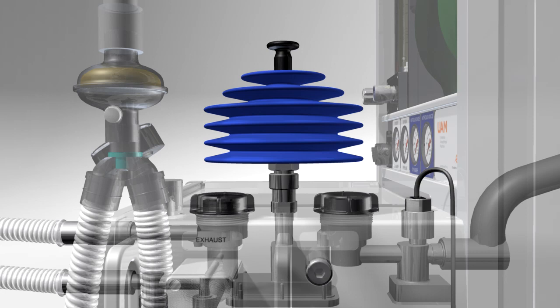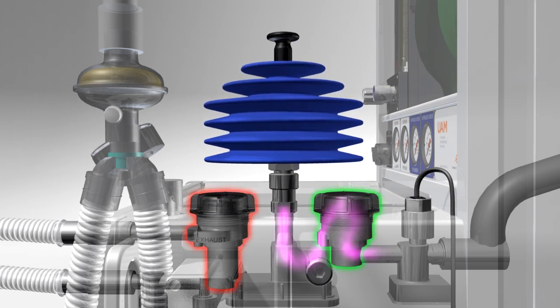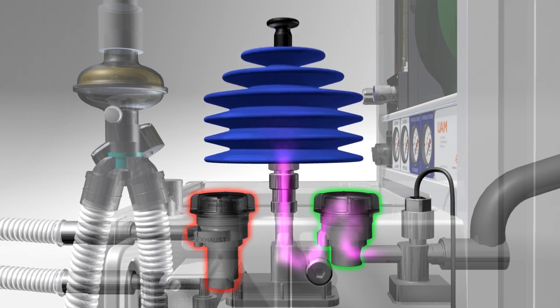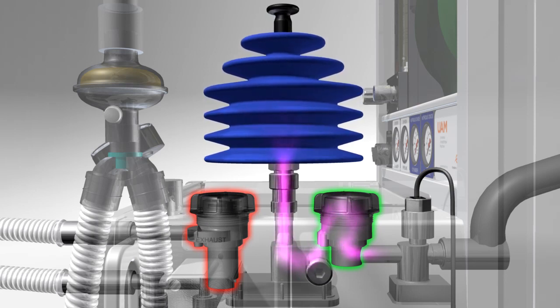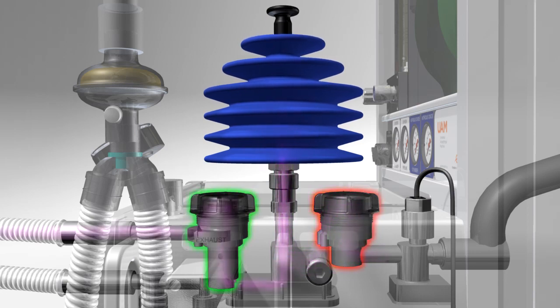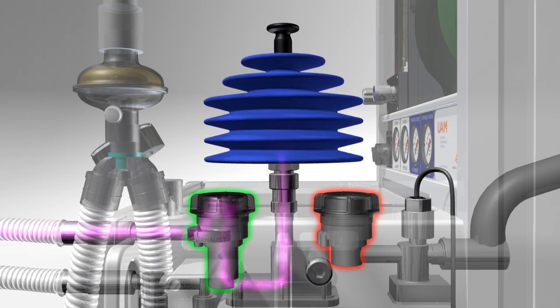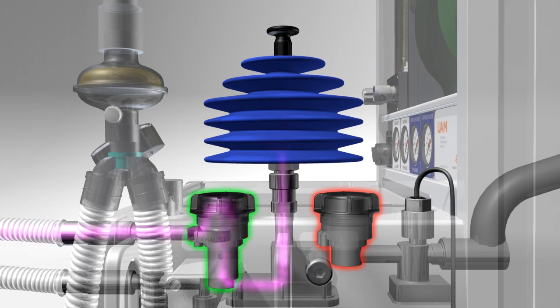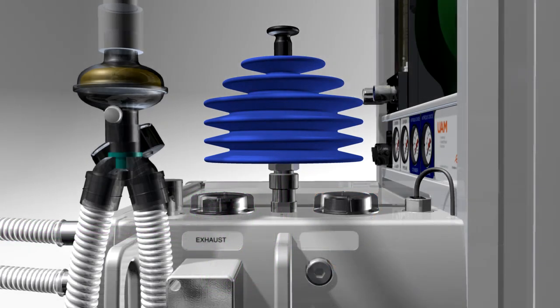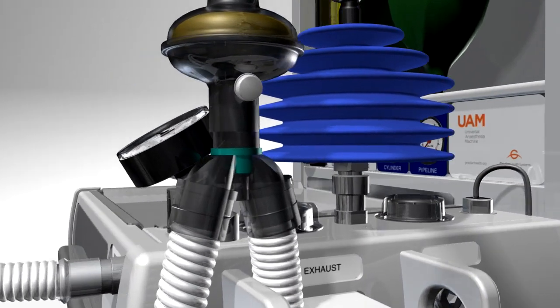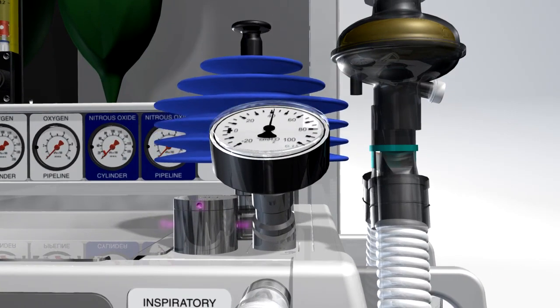The bellows between the one-way valves are used for manual IPPV. When the bellows are raised, gas flows through the first non-return valve into the bellows, while the second non-return valve remains closed. As the bellows are pushed down, the gas flows out through the second non-return valve into the inspiratory limb. The first non-return valve is now closed. Another pressure relief valve ensures that excessive manual force on the bellows cannot cause harm to the patient.